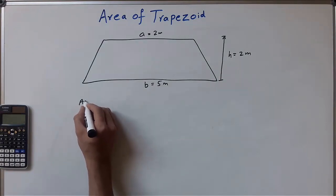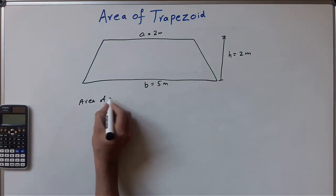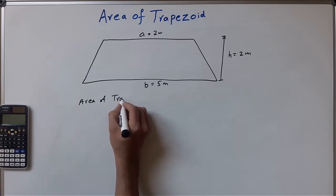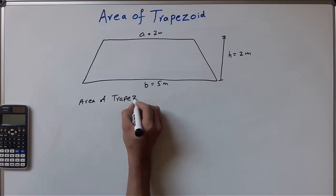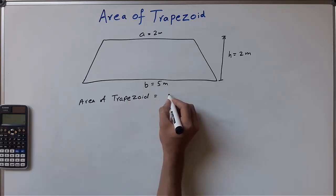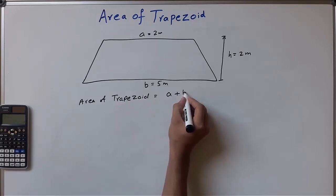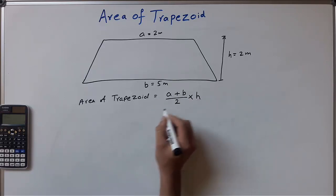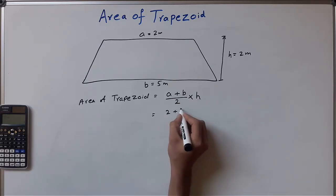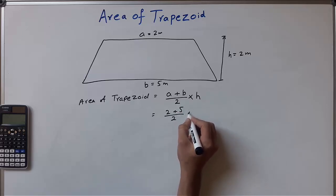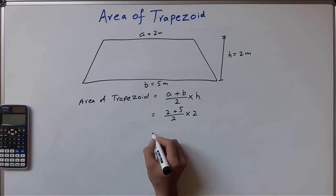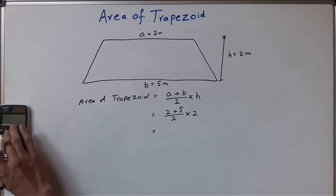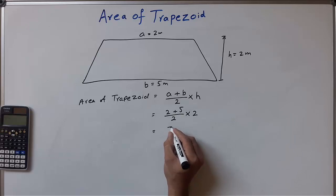So the area of a trapezoid is equal to A plus B divided by 2, multiplied by H. So it's 2 plus 5 divided by 2, multiplied by 2. We will have 7 square meters.